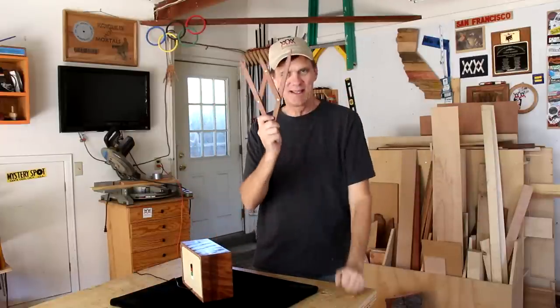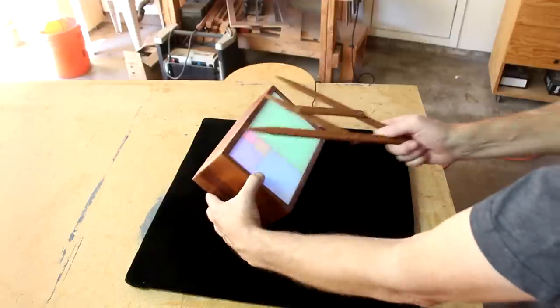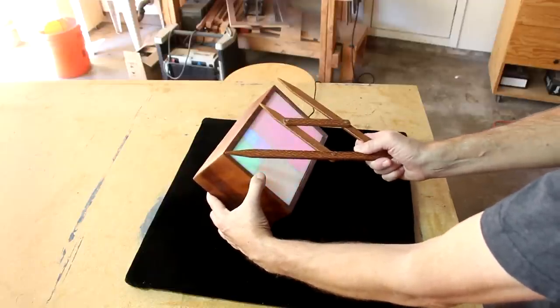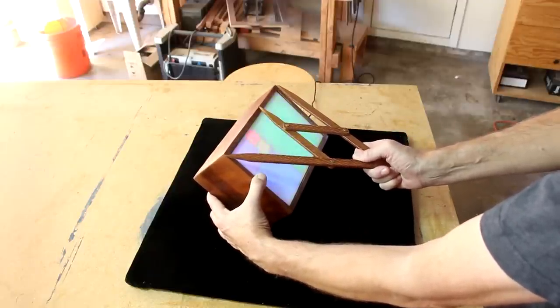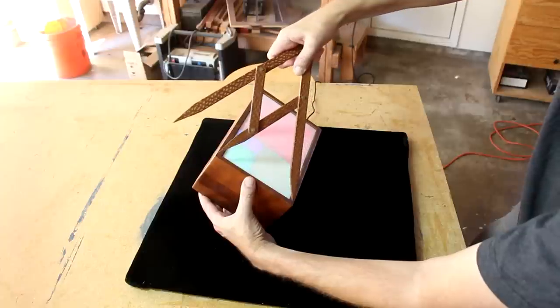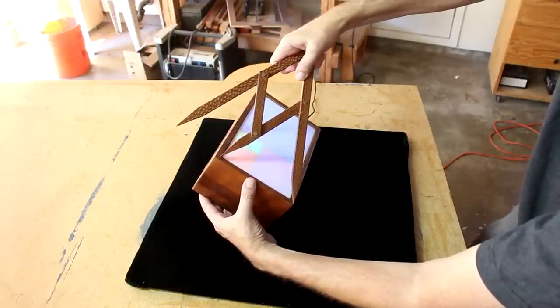Hey, remember a few years ago when I made this Fibonacci gauge? I can use it to double check, make sure I got the golden ratio correct. It's the ratio of this length to this length. And I'm pretty close.